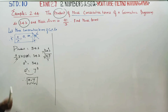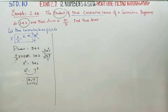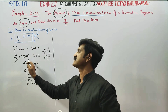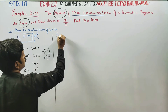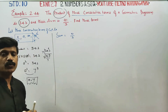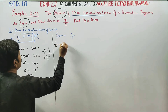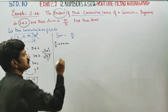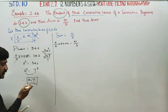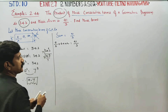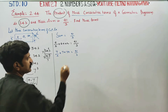We have found the value of A. Now, using the sum condition: A by R plus A plus AR is equal to 91 by 3.